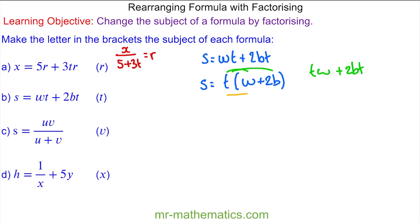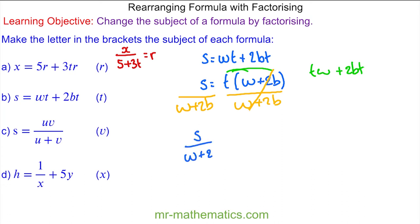We'll divide both sides by w plus 2b — these will cancel — so we're left with s over w plus 2b is equal to t, and t is now the subject.